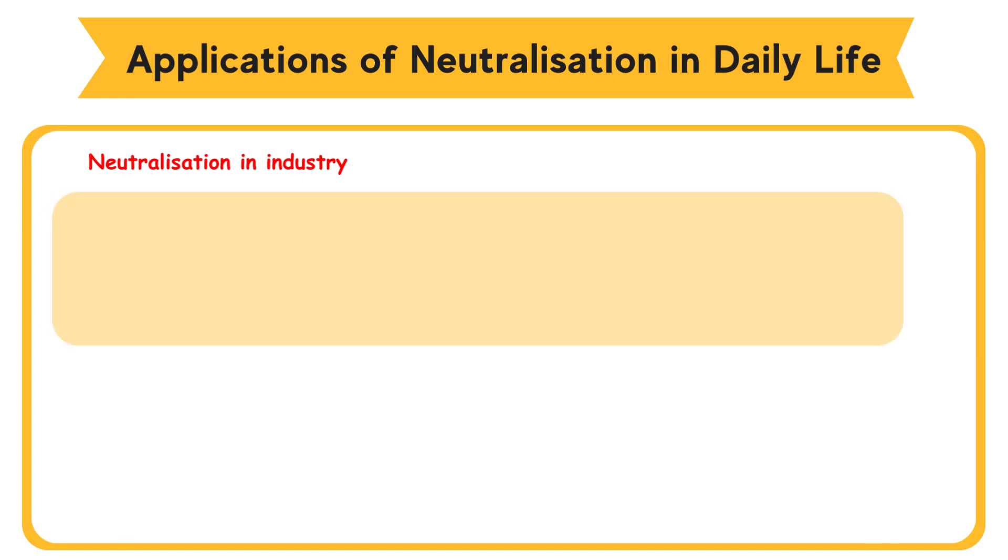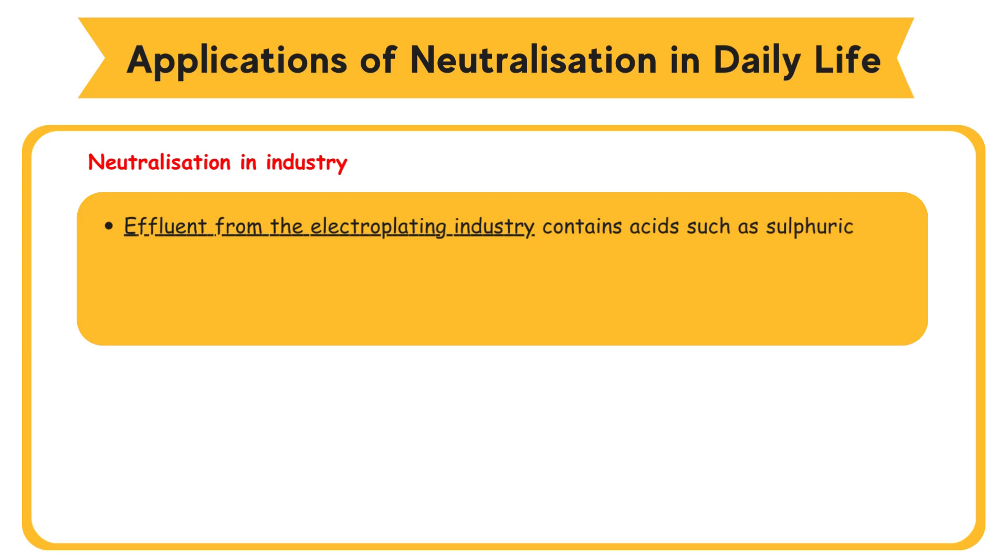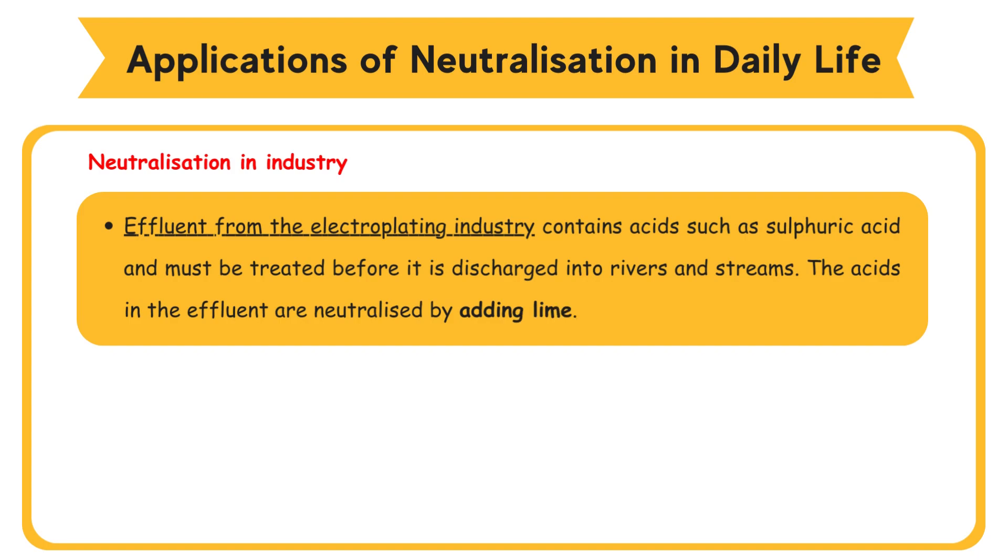Neutralization in industry. Effluent from the electroplating industry contains acids such as sulfuric acid and must be treated before it is discharged into rivers and streams. The acids in the effluent are neutralized by adding lime.